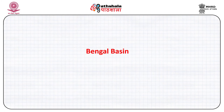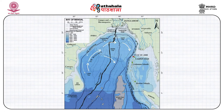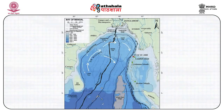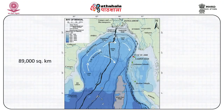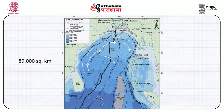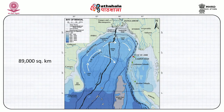We now discuss the Bengal basin, situated in the northeastern part of the Indian peninsula in the state of West Bengal, lying between 25°–25°30'N latitude and 87°30'–90°30'E longitude. It occupies an area of 89,000 square kilometers in total, of which about 57,000 square kilometers is on land and 32,000 square kilometers is offshore up to 200 meter bathymetry. The prognosticated hydrocarbon resource in the Bengal basin is placed at about 190 MMT of oil and gas equivalent.